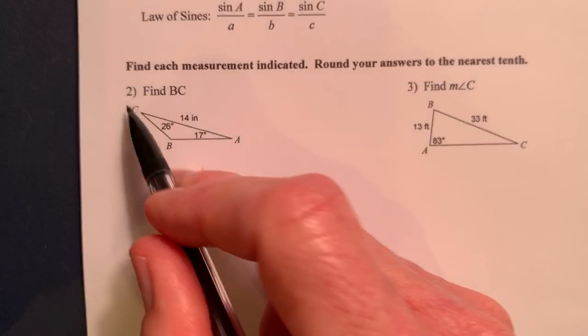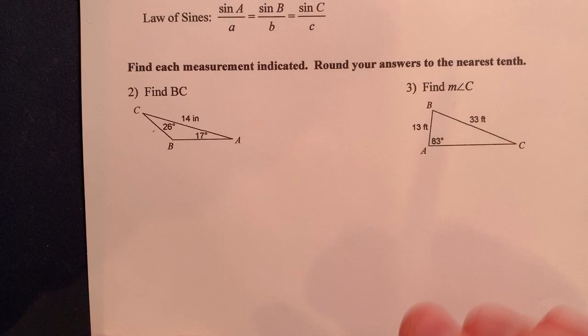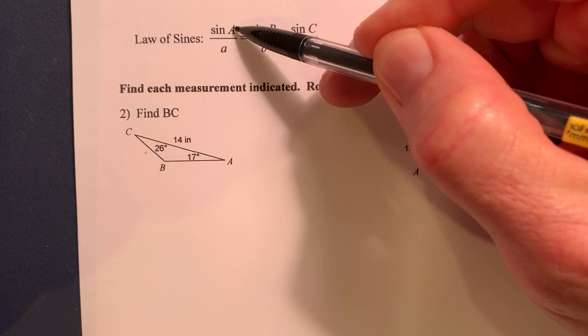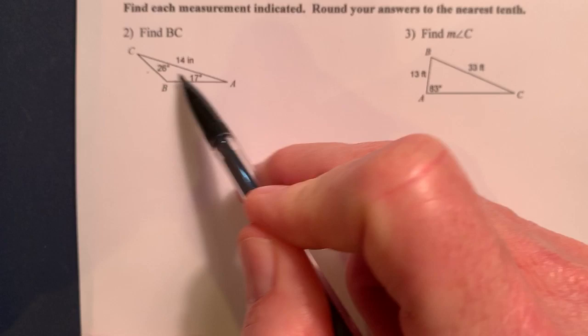I call it example number two here, but find the length of BC. So we're supposed to find this one right here. So we're going to find the length of this. Now, the one thing about Law of Sines is you have to have the measure of an angle and the length of the side opposite that angle. If you don't have that, then you'll have to use Law of Cosines or something else. But in this case, we will be able to find it.